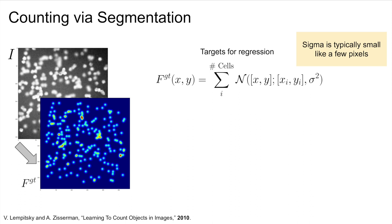Do not be distracted by the use of a normal distribution here, as the segmentation map is not a probability distribution and does not sum to one.